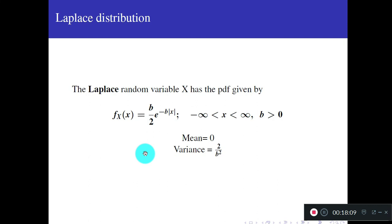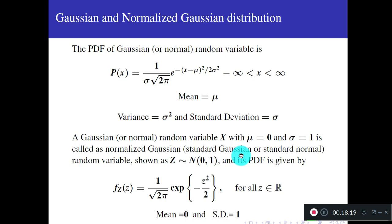The variance of the Laplace distribution is 2/b². So remember: Laplace random variable has mean = 0 and variance = 2/b².